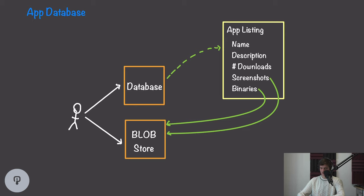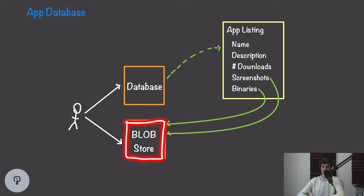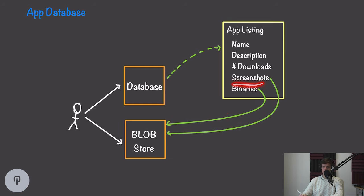Another challenge is actually storing screenshots and binaries. We can't store this type of data directly inside the database — first because there's simply too much data, and second because it would significantly degrade query performance. Databases aren't designed for storing large, unstructured binary data, so we're going to introduce a blob store specifically designed for storing large binary content. Our database will instead store links or keys referencing URLs in the blob store. Blob stores can distribute data across many nodes, allowing us to scale storage by adding more nodes.